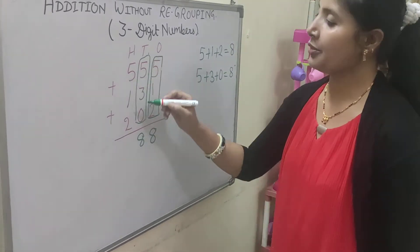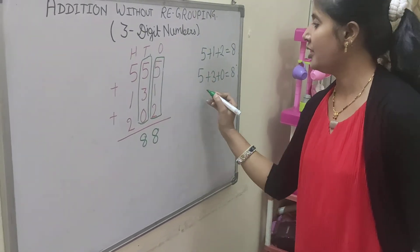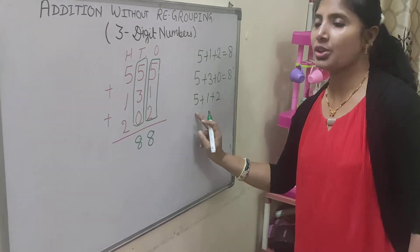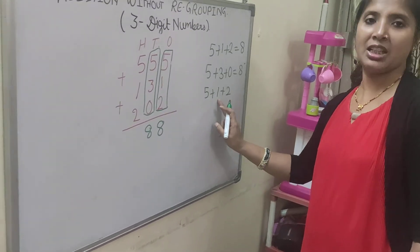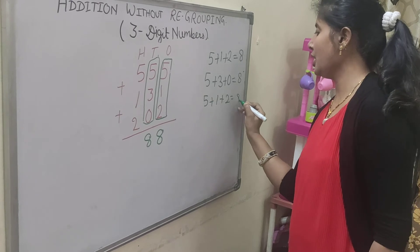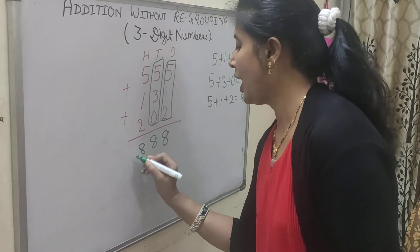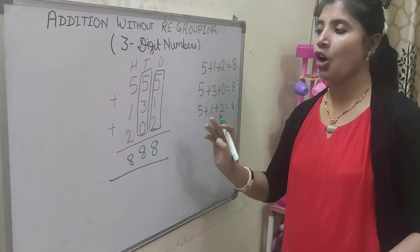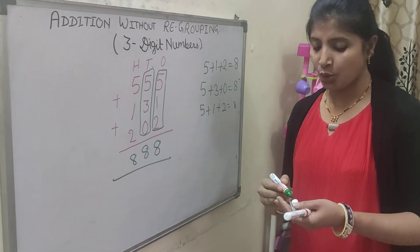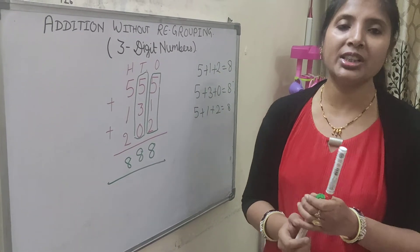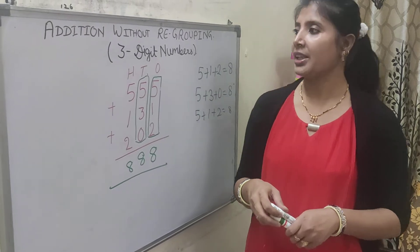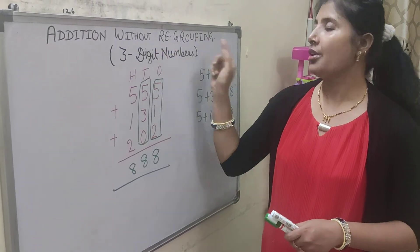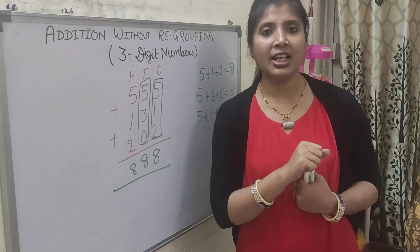Now we have to add the 100s place digits. That is 5 plus 1 plus 2. 5 plus 1 is 6, and 6 plus 2 is 8. So we have 888 vegetables in all. Now you can do some more examples at home and practice 3-digit numbers without regrouping. Thank you and have a nice day.